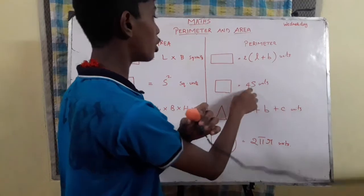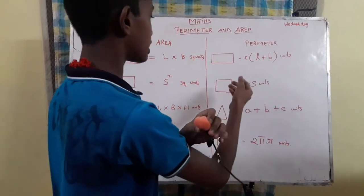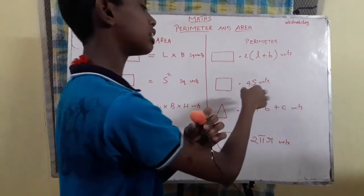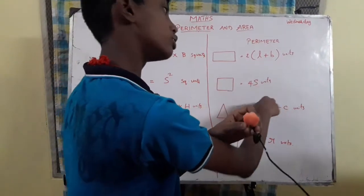Perimeter of square: 4 into side, or 4S. That is an easy method. This is in units.